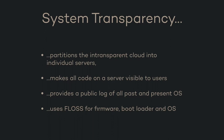In a nutshell, system transparency partitions the intransparent cloud of servers into a set of individual servers that have unique platform identities, which allows us to make specific statements about specific servers. System transparency also makes all the code running on a particular server visible to the users, which means that we force bad actors to lie about very specific things.